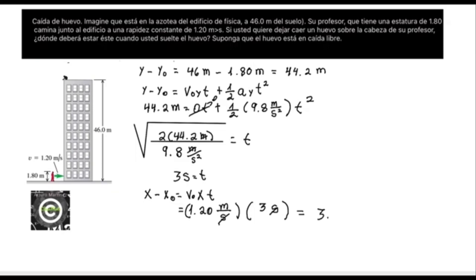We can find out the distance in x by giving a result of 3.60 meters, which means that when the teacher is at a distance of 3.60 meters, the student must drop the egg. The teacher will take three seconds to reach the door of the building, and at that moment the egg will be reaching the head of the teacher, thus solving the problem.